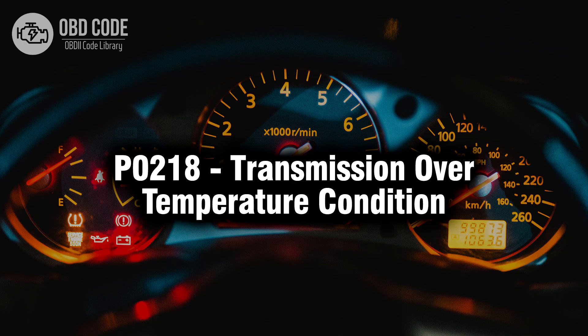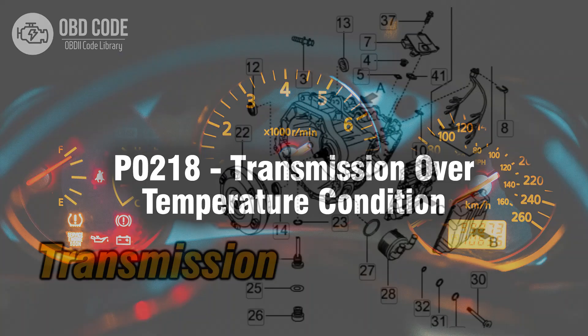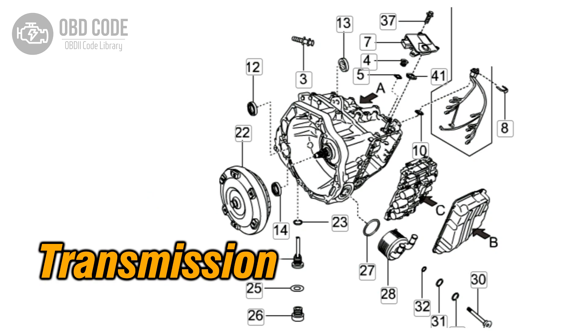Welcome. In this video we will talk about code P0218, its symptoms, causes and possible solutions. The P0218 trouble code indicates a transmission over temperature condition. This code typically points to the transmission operating at a temperature that exceeds the normal range, potentially leading to damage to transmission components and performance issues.